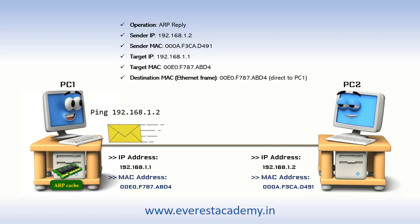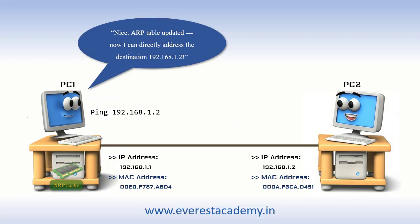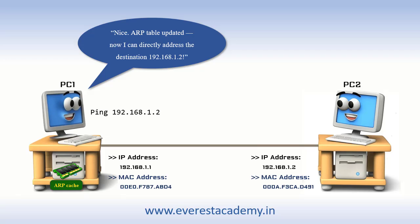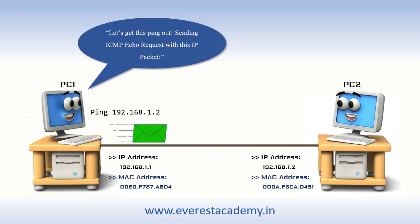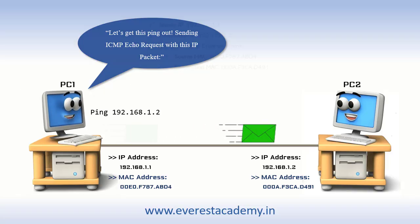PC1: Nice. ARP table updated. Now I can directly address the destination 192.168.1.2. Let's get this ping out — sending ICMP echo request with this IP packet.